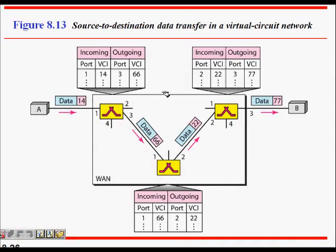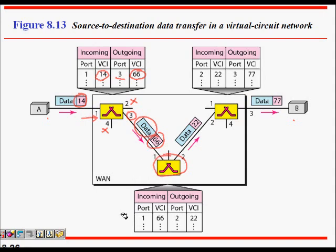During data transfer, A sends data to B with VCI 14. The switch looks at port 1, VCI 14 in its table and forwards it to port 3 with new VCI 66. The packet arrives at the next switch on port 1 with VCI 66, which maps to port 2 with VCI 22. Then the packet arrives on port 2 with VCI 22, which maps to port 3 with VCI 77. These routing tables are allocated during the setup phase.